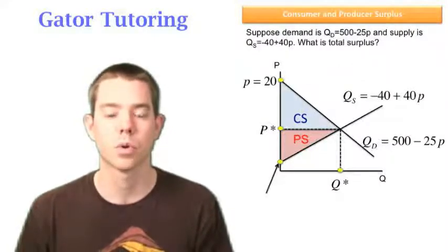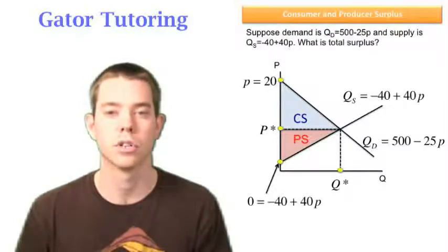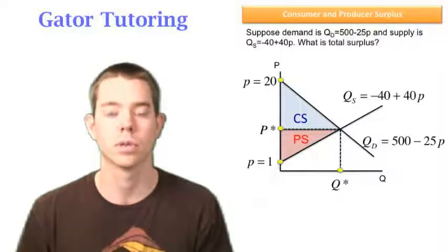This next point is where quantity supplied equals zero. We're going to do the same process, and we solve for P to be equal to $1 when quantity supplied is equal to zero.